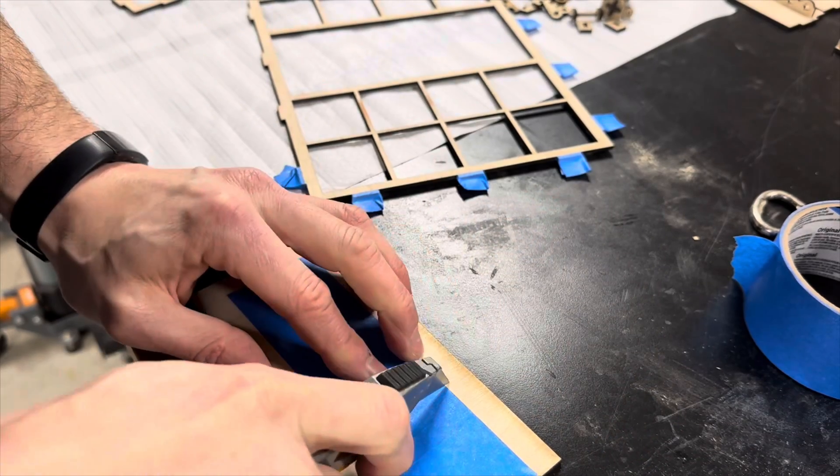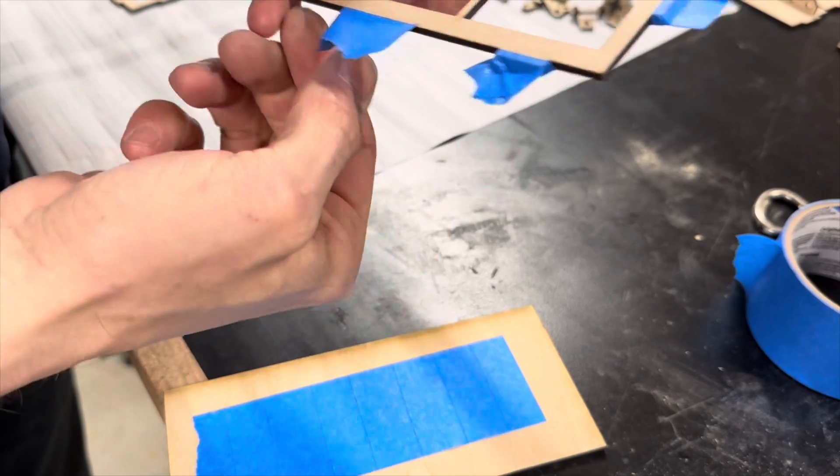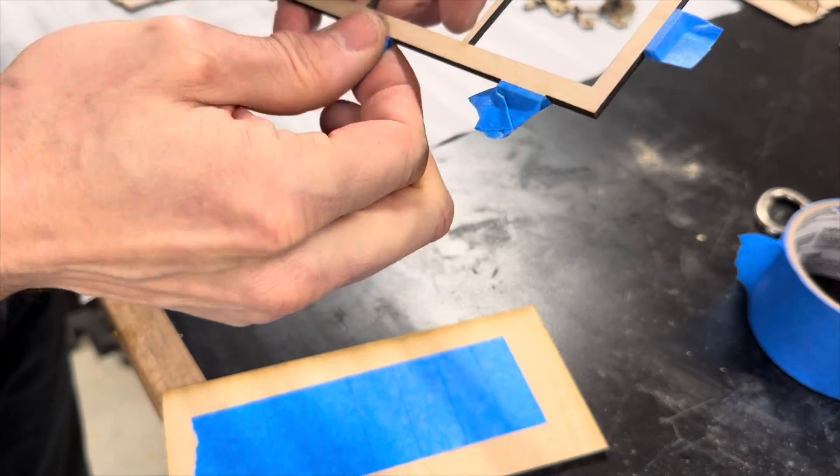I masked off all the assembly tabs for all the parts that were going to be spray painted. As tight as all the tolerances were, I didn't want to add any more thickness to my material.